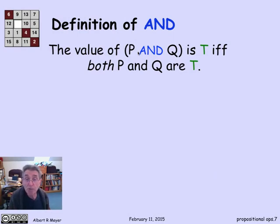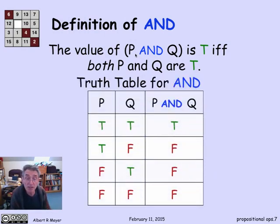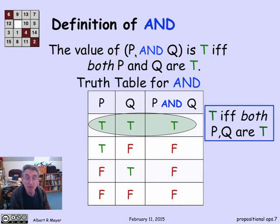There's another connective AND which works even more straightforwardly. The value of P and Q is true if and only if both P and Q are true. The salient row is that it's true only if both P and Q are true.